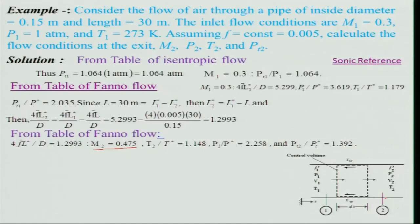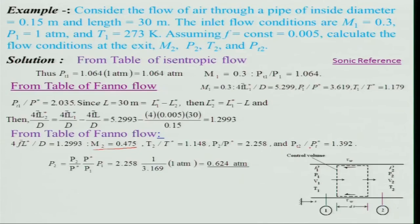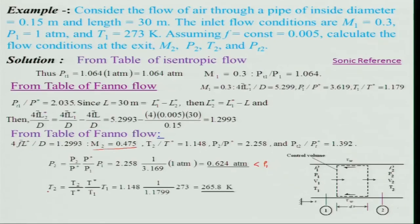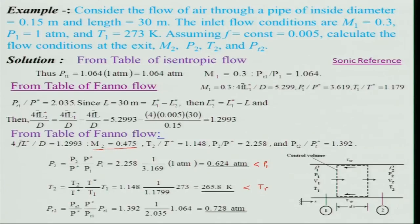Now that M2 is known, we read T2/T*, P2/P*, and PT2/PT* from the Fanno table. Then: P2 = (P2/P*) * (P*/P1) * P1 — substituting known ratios gives P2 < P1. Similarly T2 = (T2/T*) * (T*/T1) * T1, and we find T2 < T1. And PT2 = 0.728 atm, which is less than PT1 = 1.064 atm — confirming total pressure losses due to friction.